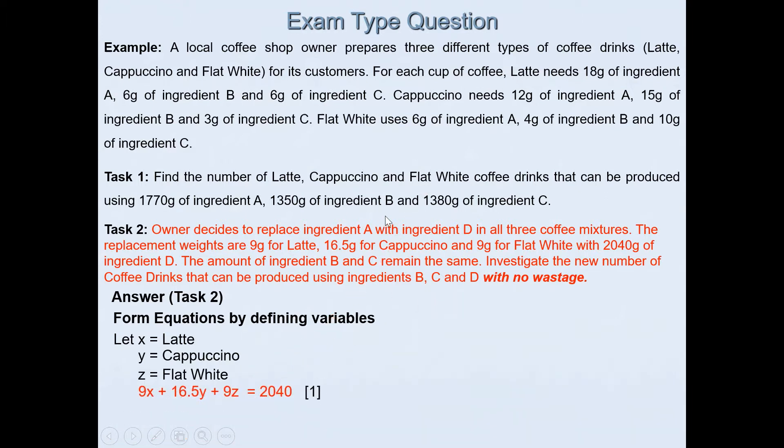In this case, the first equation is 9x + 16.5y + 9z = 2040. Likewise, 6x + 15y + 4z = 1350 is our second equation, and the third one is 6x + 3y + 10z = 1380.